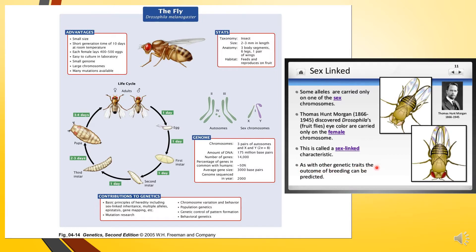As with other genetic traits, the outcome of breeding can be predicted. Why did he select Drosophila? It is a very common question in board examinations. Because of its small size, it has a short generation time of 10 days and can grow at normal room temperature. Each female lays 400 to 500 eggs, so the number of offspring produced is huge, enabling better study. It is easy to culture in the laboratory. It has a small genome — only four pairs of chromosomes: three pairs of autosomes and one pair of sex chromosomes. Their sex chromosome is XY type, like human beings. They have large chromosomes and many mutations are available.